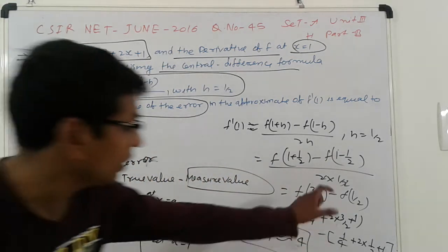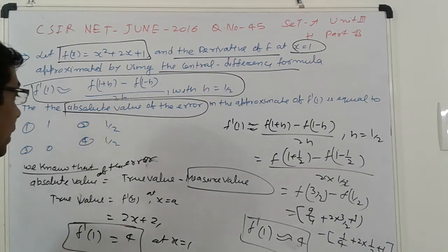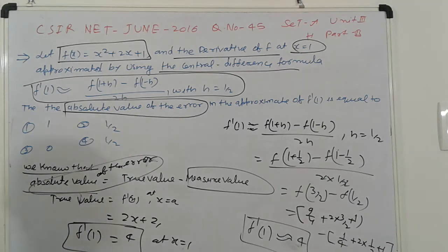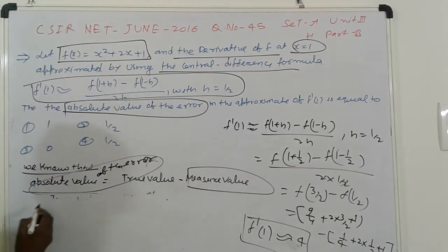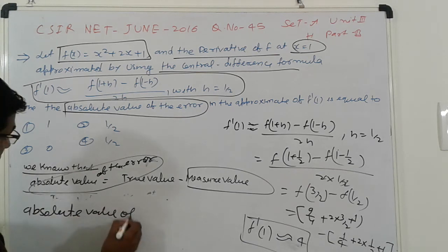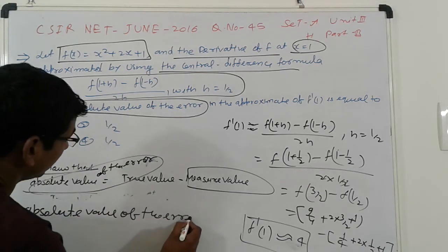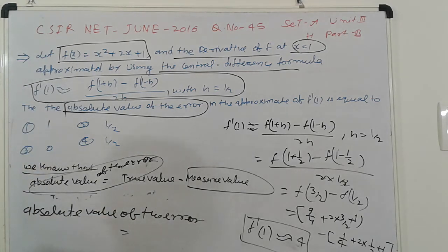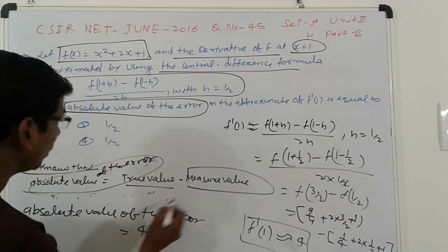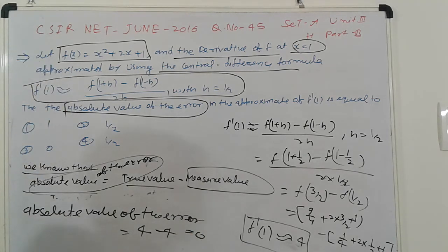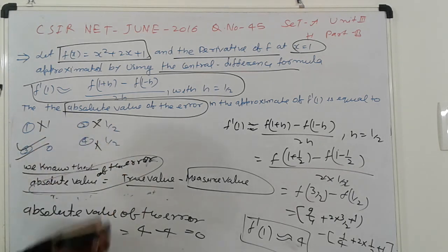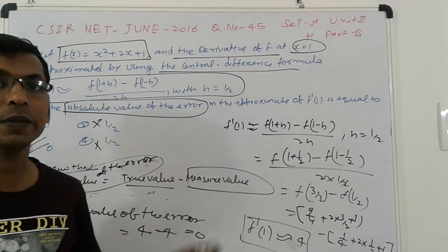So simplify that term and we get 4. So that case here what is the absolute value of the error? Here absolute value of the error equals true value minus measured value, which is 4 - 4 = 0. And here that so it's a very easy problem and is the conceptual problem of this, so it's easy.